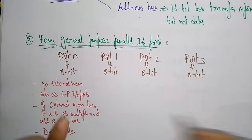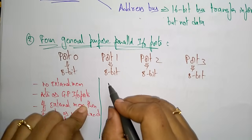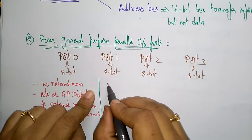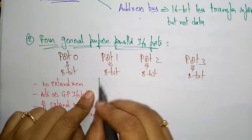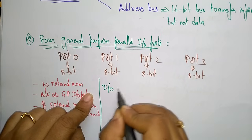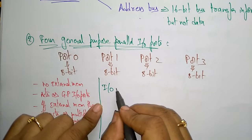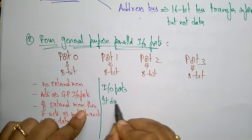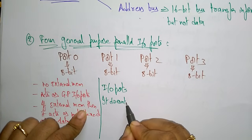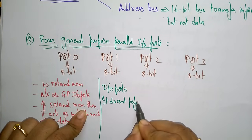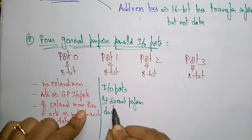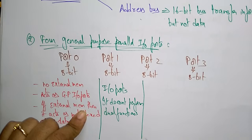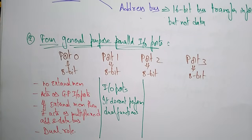Port 1 is used for various interfacing activities. It is an 8-bit port which performs only I/O operations. It does not perform dual functions.